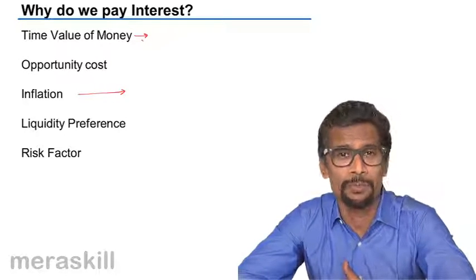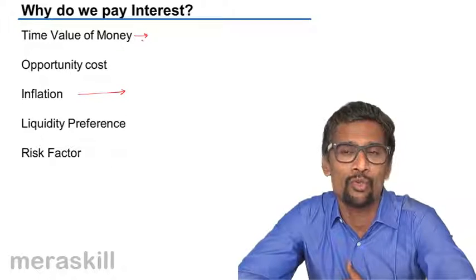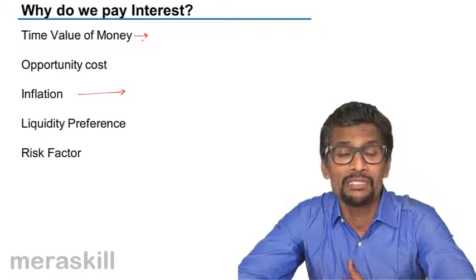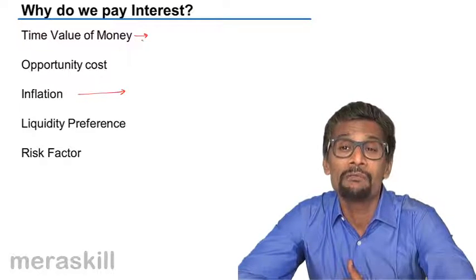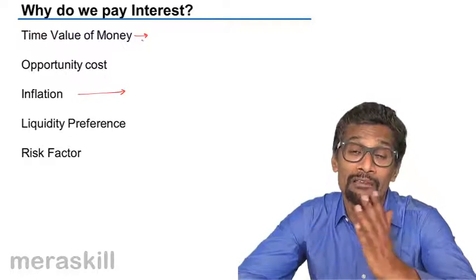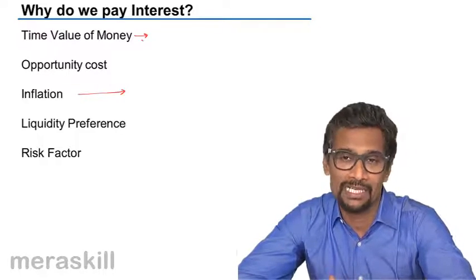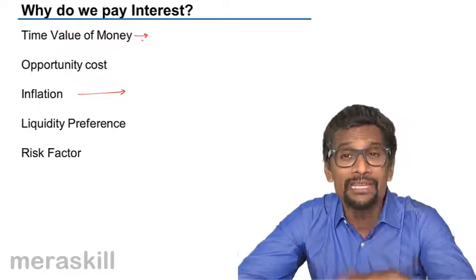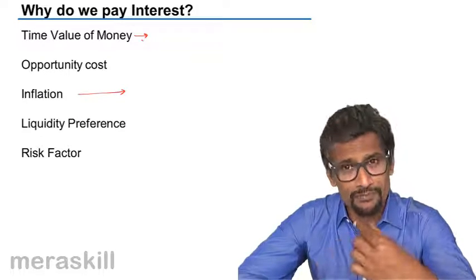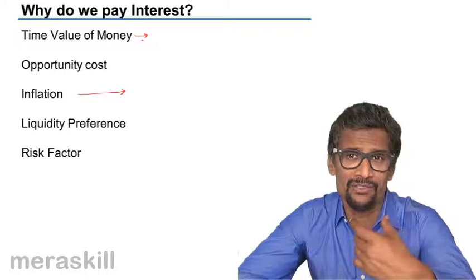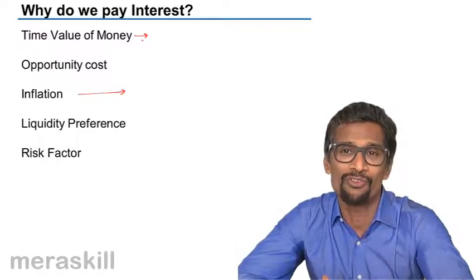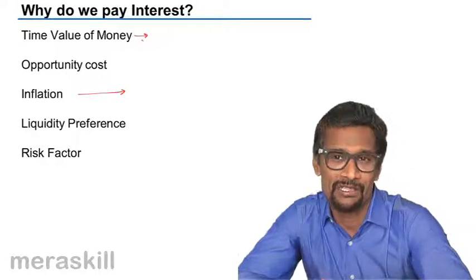If he lends that 5000 rupees to someone, when they return it to him after five years, the benefit which he would have got five years ago is not going to be the same that he gets. Hence, interest has to be paid as a compensation for the fall in the value of money over the period of five years.